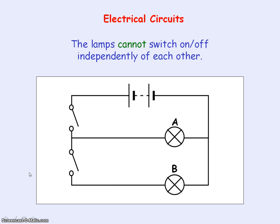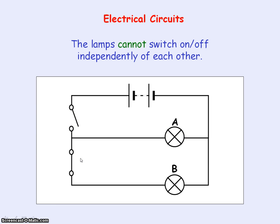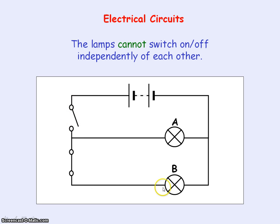This circuit, however, wouldn't work in the same way. If we close the top switch, lamp A is switched on but lamp B is off, because we have a complete circuit loop for current to flow. But if we open the top switch and close the bottom switch, lamp B will not light up because the circuit loop is not complete — there's a break in the circuit so current cannot flow through B.